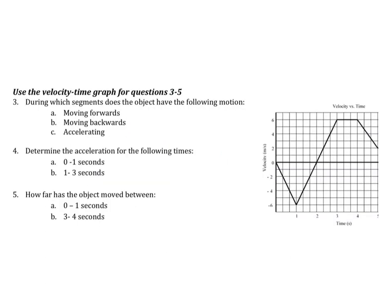Moving on to the velocity-time graph for number three: during which time segments does the object have the following motion? Moving forward on a velocity graph is when the line is above the x-axis — be careful of the numbers, as every three blocks goes up by one. Moving forward is from two to five seconds. Moving backwards is when it's below the x-axis, so from zero to two. Accelerating on a velocity graph means you have a diagonal line — that's from zero to three, and then four to five seconds.